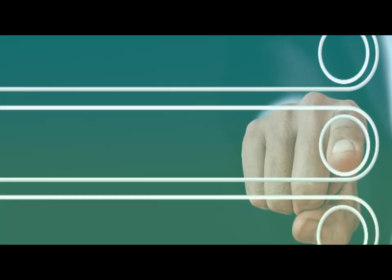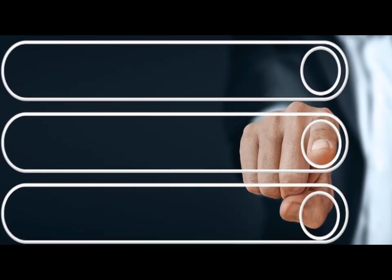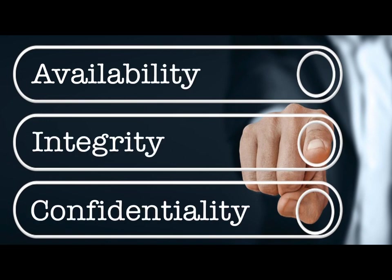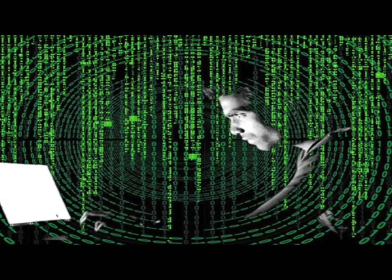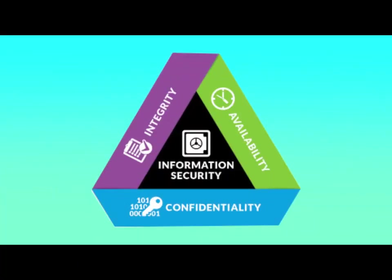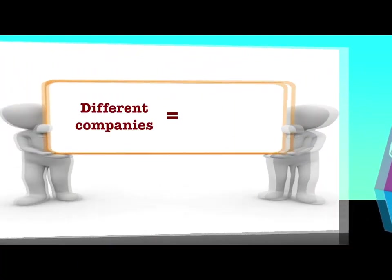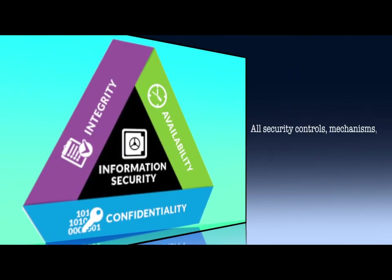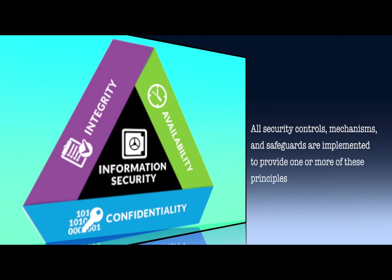The three fundamental principles of security are Availability, Integrity, and Confidentiality, and are commonly referred to as the CIA Triad, which forms the main objective of any security program. The level of security required to accomplish these principles differs per company because each has its own unique combination of business and security goals and requirements. All security controls, mechanisms, and safeguards are implemented to provide one or more of these principles.